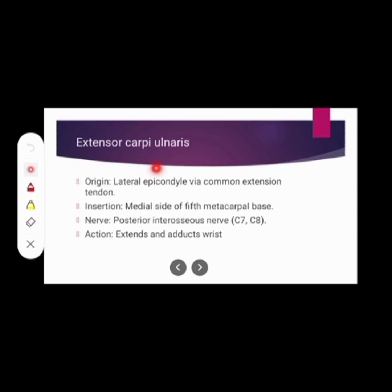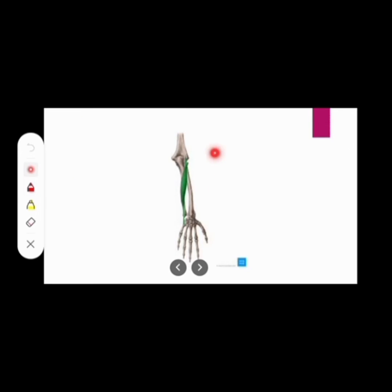The next muscle is extensor carpi ulnaris. Its origin: lateral epicondyle via common extensor tendon. Insertion: medial side of fifth metacarpal base. Nerve supply: posterior interosseous nerve. Action: involved in wrist extension and wrist adduction.